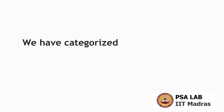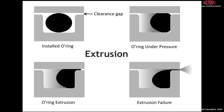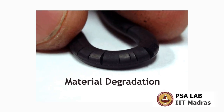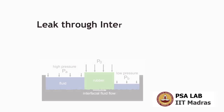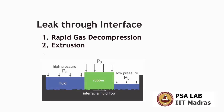We have categorized different types of failure modes like rapid gas decompression, extrusion, material degradation, etc., and noted that all these failure modes come under a single category of leakage — that is, leak through interface.